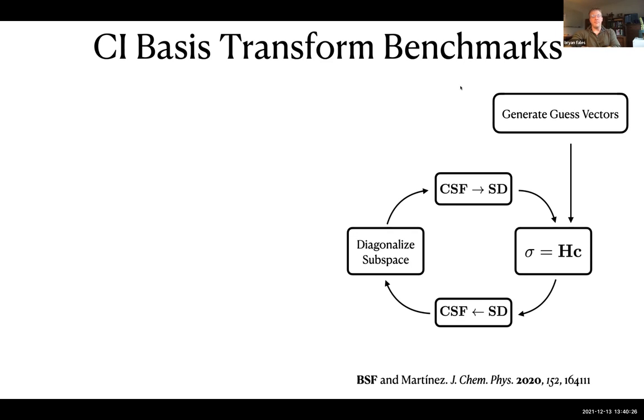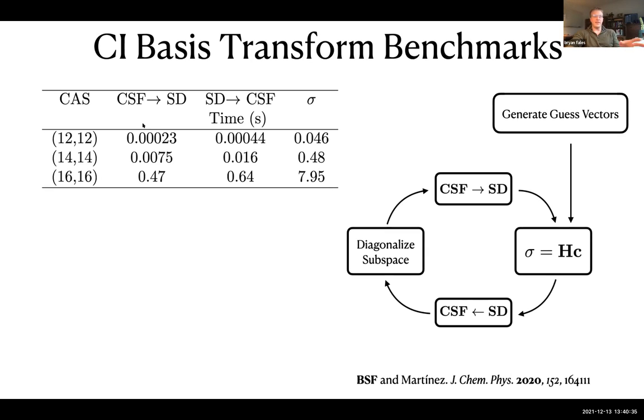Putting all the pieces of the puzzle together, we formulated the graphics card accelerated CI basis transform algorithm. The performance of the full CI program was going to depend strongly on the ratio between this transformation time and the rate limiting step, which is the sigma formation time. This table shows some timings for the basis transformation times. CSF to determinant on the left, determinant to CSF in the middle, and sigma vector formation on the right. All times are in seconds. We're looking at three different active spaces: 12 electrons and 12 orbitals which I consider small, 14 electrons and 14 orbitals as intermediate, and 16 electrons with 16 orbitals starting to get pretty large. In every one of these cases, we observed that the basis transformation combined is between 15 and 20 times faster than the sigma formation.